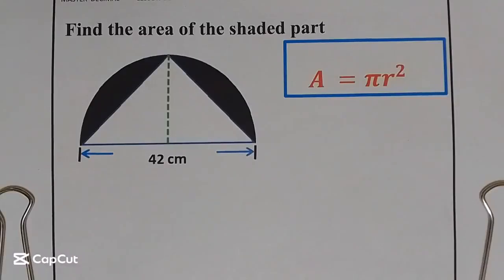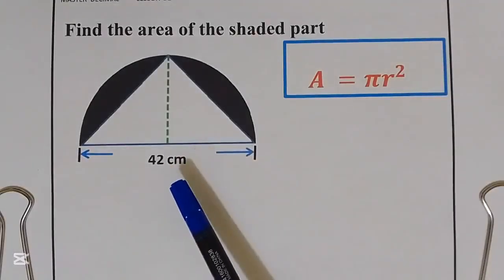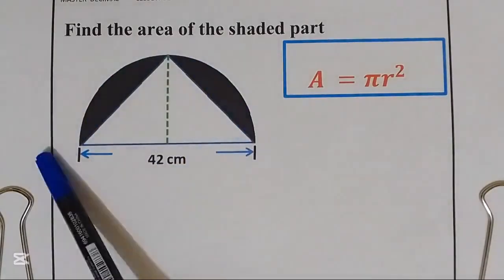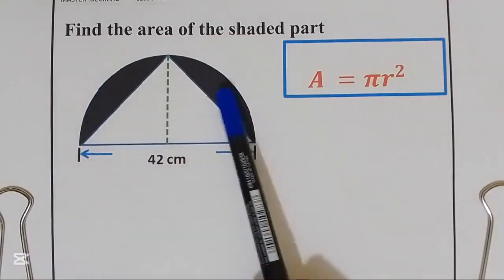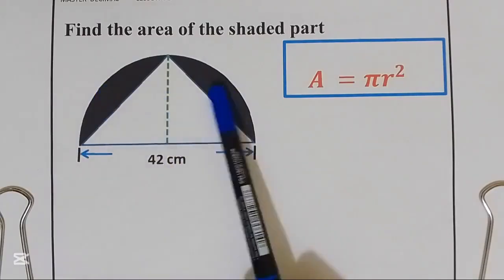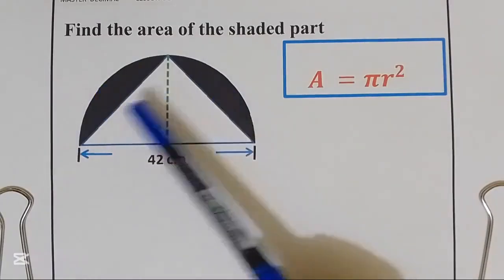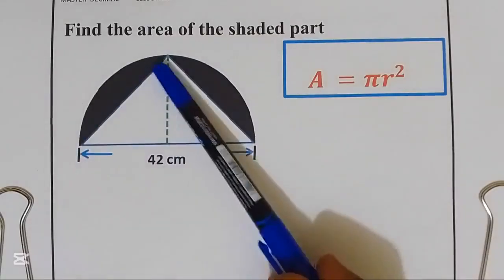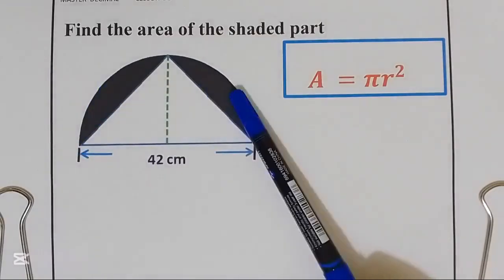Hello, welcome back to the channel. We are supposed to find the area of the shaded part. From our given question, we have a semicircle with a right-angled triangle inside. We need to find this painted part that is painted black. We are going to take the area of the semicircle, take away the area of the right-angled triangle, and we are going to get the area of the shaded part.